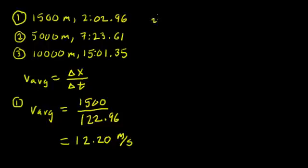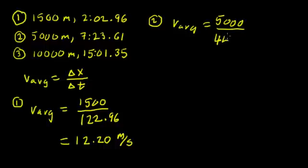Race number two, it's the same technique but the numbers are different. So average velocity is still change in position over change in time. This time it's 5,000 meters divided by the time, and here the time is 7 minutes 23.61 seconds, and that's going to convert into 443.61 seconds. So when you punch it into the calculator, it's going to give you 11.27 meters per second.